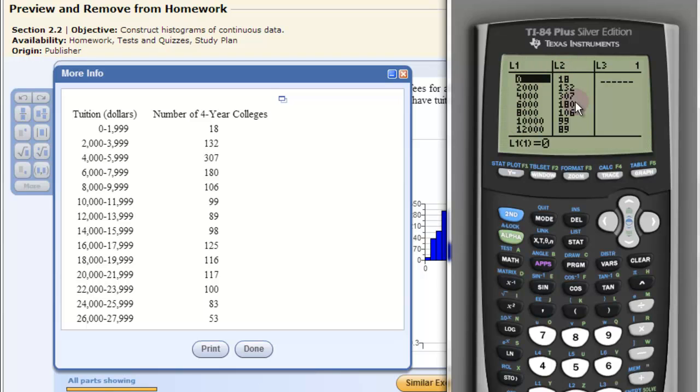Then L2 will be our frequencies. So how many are from zero to two thousand? Eighteen. Two thousand to four thousand? One thirty two. That's our frequencies.